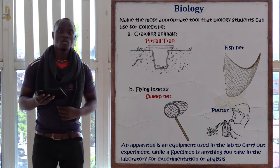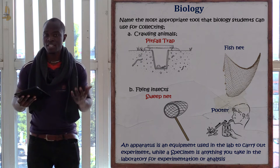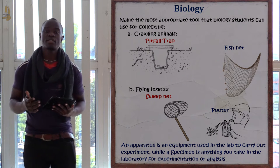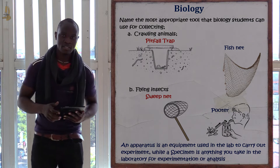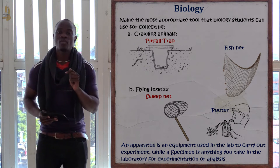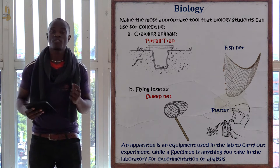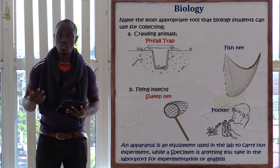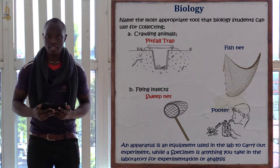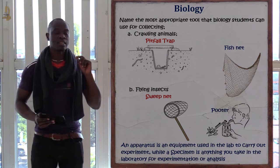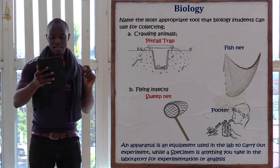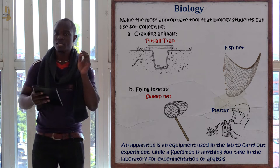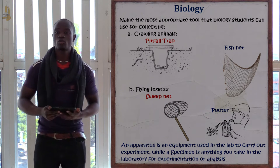The next one is flying insects. The best apparatus to use for catching flying insects is a sweep net. You should never say only 'a net' because that answer will be wrong. We also have the fish net, which is used for capturing fish or aquatic organisms. So you must be specific and mention that for flying insects, we use a sweep net.